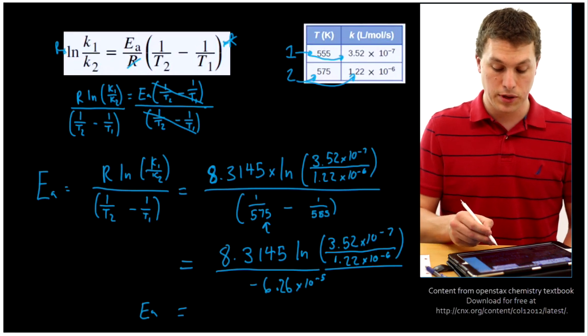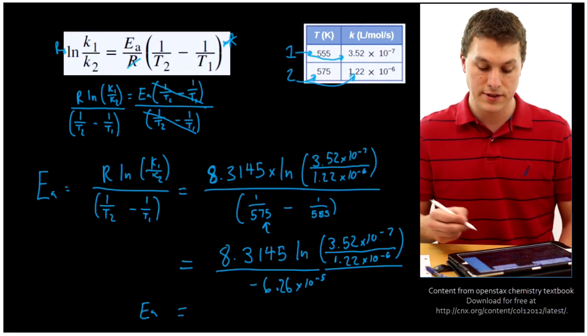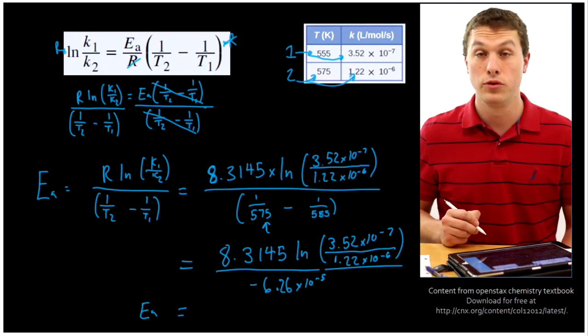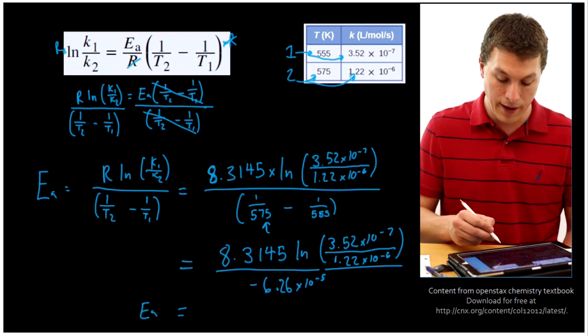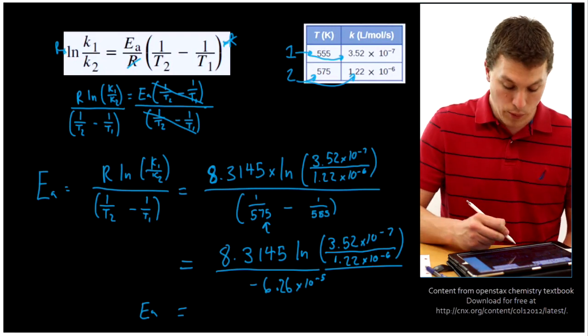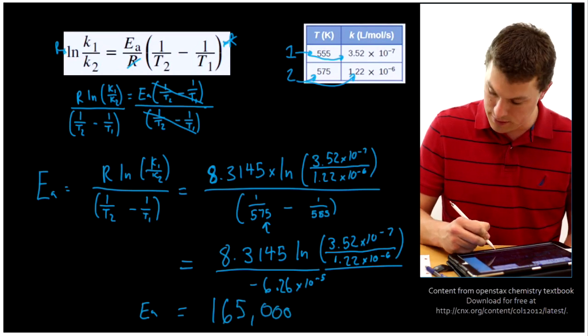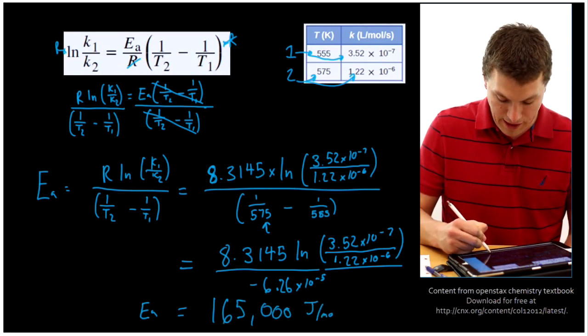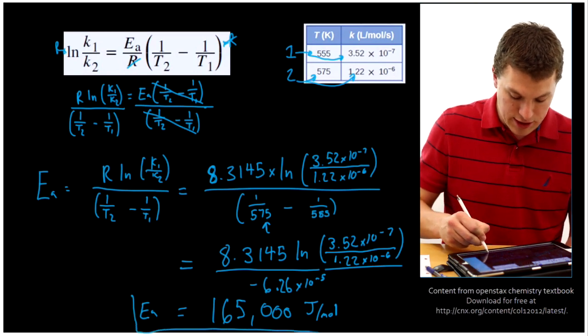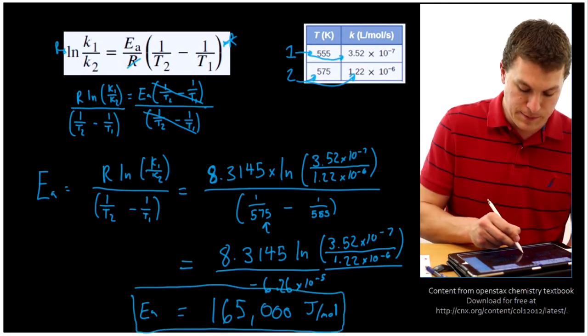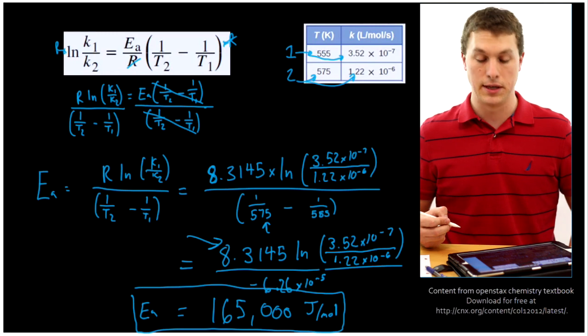And then what you'll do is you'll plug in the top, 8.3145 times the natural log of those 2Ks there, and divide that by our negative 6.26 times 10 to the minus 5. When you do that, rounded to 3 sig figs, you'll get 165,000 joules per mole. And that's the units that you should get out for our activation energy, and that's because of the units that we have in our gas constant right there.